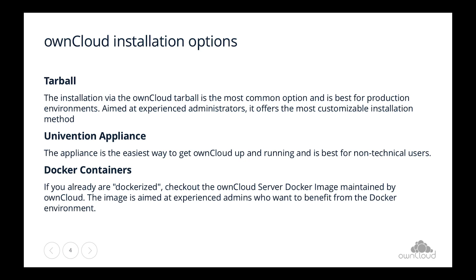The most common installation option for production environments is still the tarball. But if you just want to get it up and running and test things, the Univention appliance works well — even for production setups up to around 300 users or more, depending on the use case. It helps a lot by hiding and automating some of the complexity of managing infrastructure.